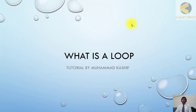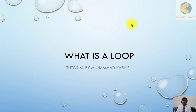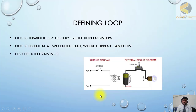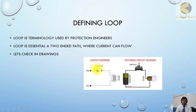Welcome back. Now we will start our new topic: what is a loop? In protection philosophy, the word loop is used very frequently and you should be able to understand it. For example, if you have a bulb and you want to connect a DC supply to it, you connect positive and negative — that is called a loop. Basically, a loop is a closed two-ended path where current can flow.